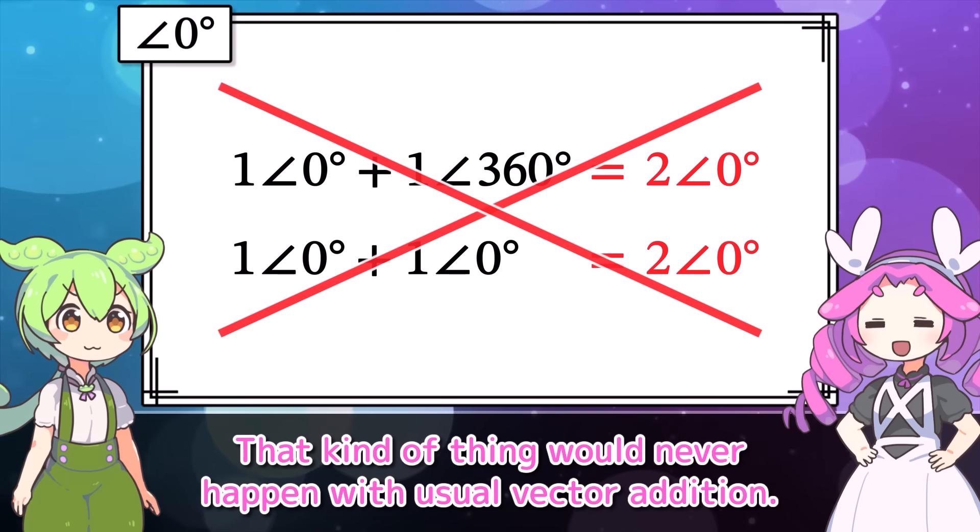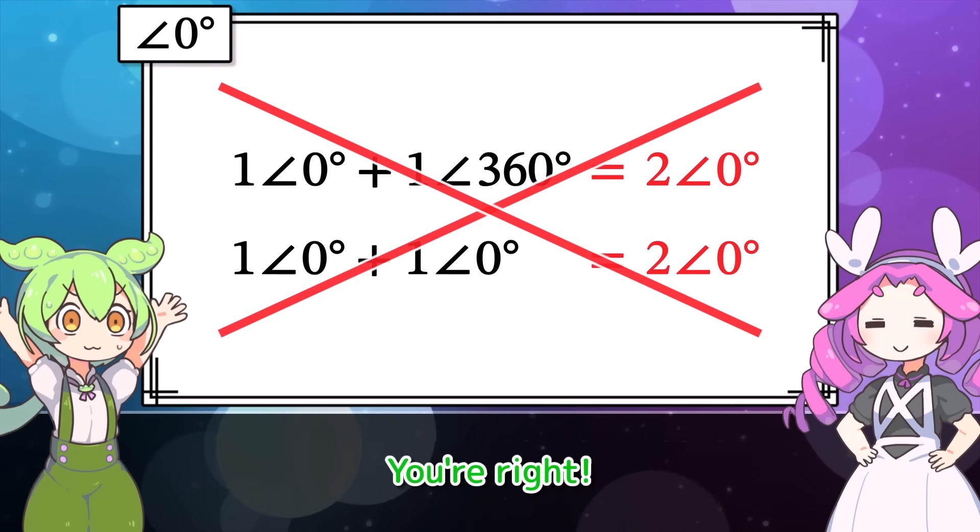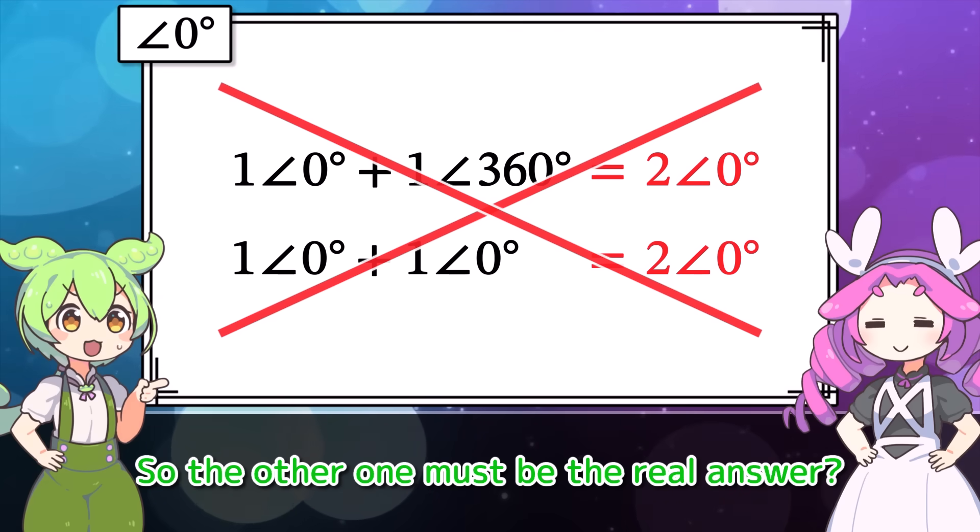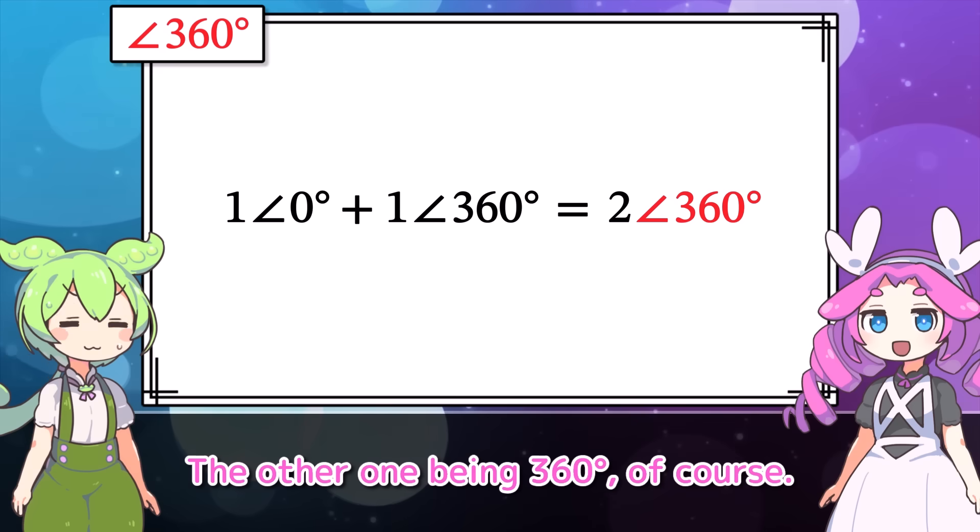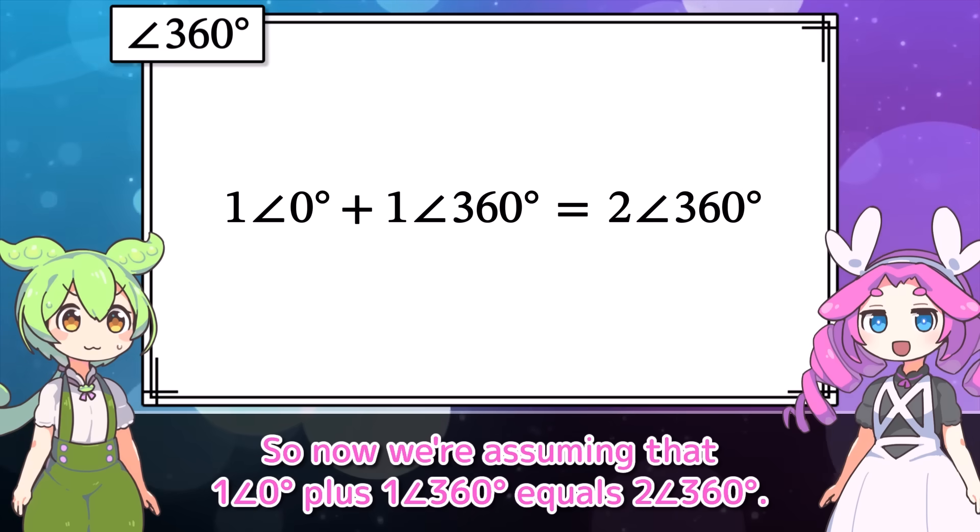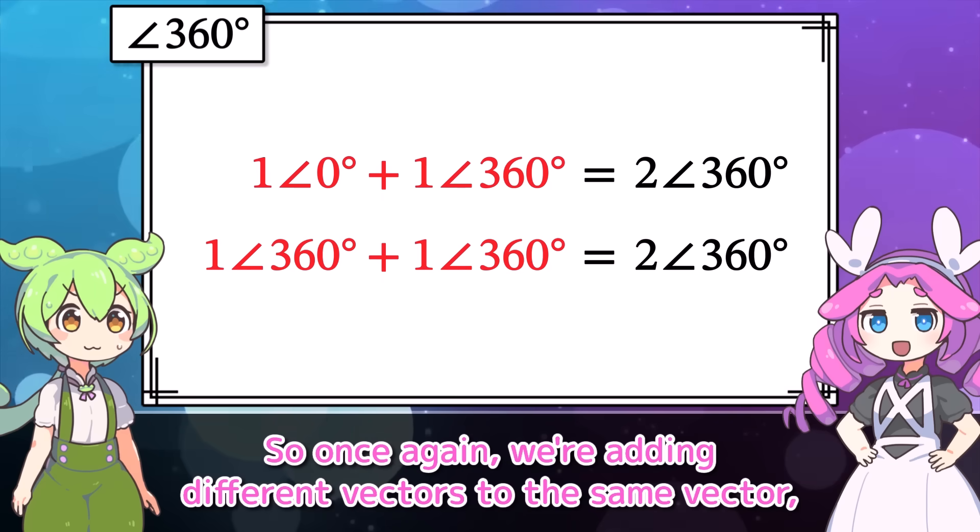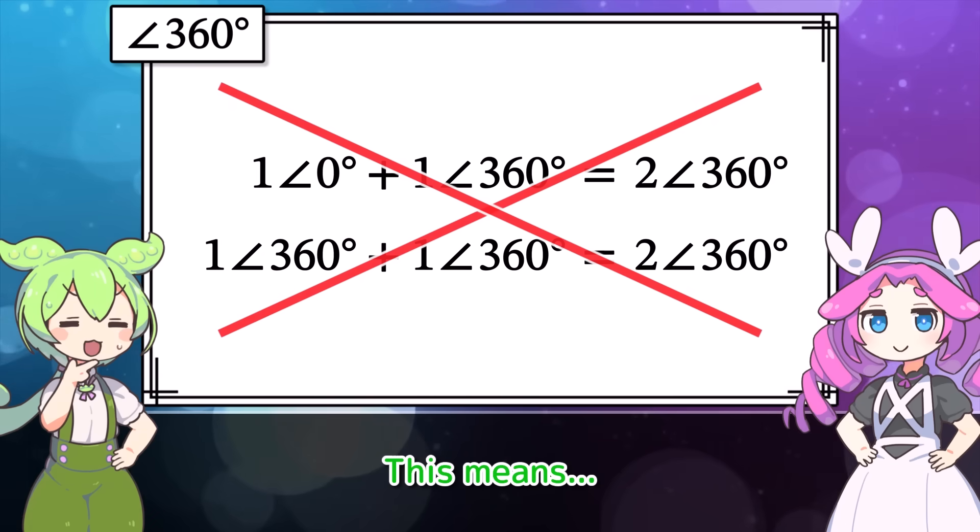What an interesting situation. Now, which of the two is the right result for vector addition? To figure that out, let's first assume the answer is 2∠0°. So that means we're assuming 1∠0° + 1∠360° = 2∠0°. This feels kind of strange. On the left, we have 0 degrees and 360 degrees, but on the right, it's just 0 degrees. I can't quite explain it. But something feels off.